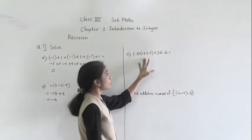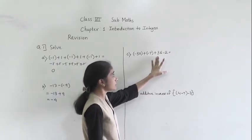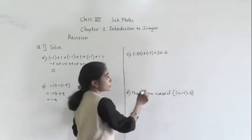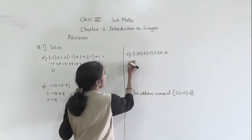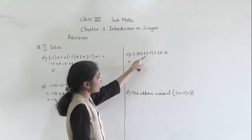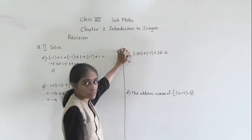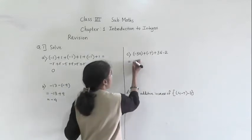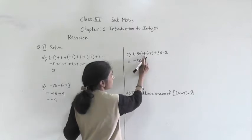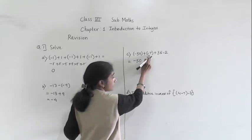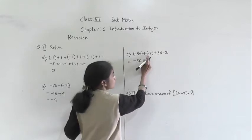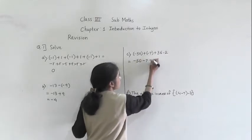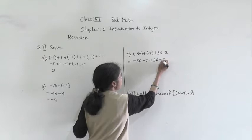Now let's see the next example: minus 50 plus minus 7 plus 36 minus 2 equals. We need to solve this. So minus 50 is in the bracket - out of the bracket no sign means it is plus. Open the bracket: plus minus equals minus. So minus 50 will go. Then plus and this minus 7 in the bracket: plus minus equals minus. Then this plus 36 as it is, minus 2.